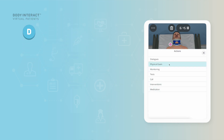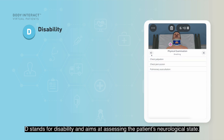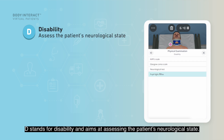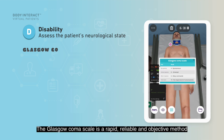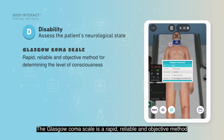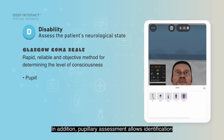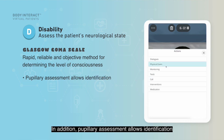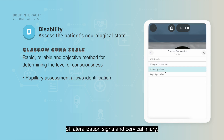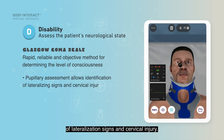D stands for disability and aims at assessing the patient's neurological state. The Glasgow Coma Scale is a rapid, reliable, and objective method for determining the level of consciousness. In addition, pupillary assessment allows identification of lateralization signs and cervical injury.